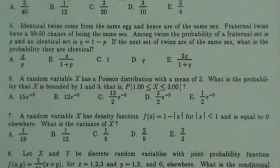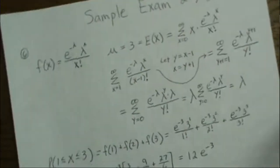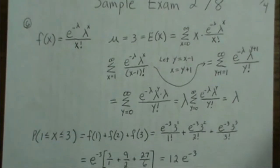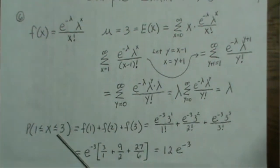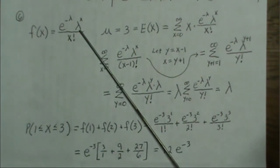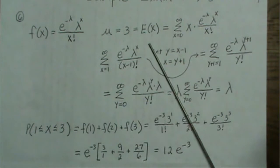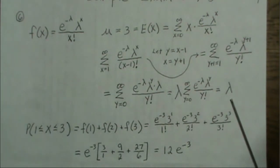Number six: a random variable X has a Poisson distribution with a mean of three. What is the probability that X is between one and three? We're given it's a Poisson and we want P(1 ≤ X ≤ 3). We don't know lambda directly, but the mean is three. For a Poisson, the mean equals lambda, so lambda equals three. Many should instantly know that E[X] equals lambda for a Poisson.